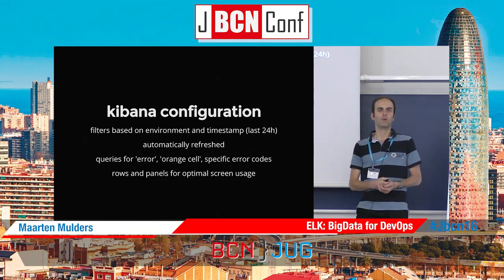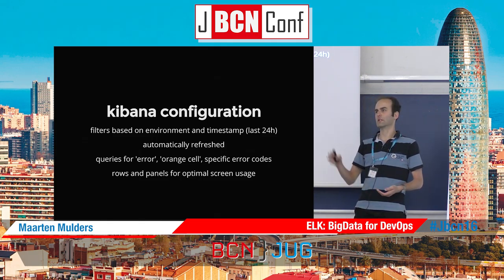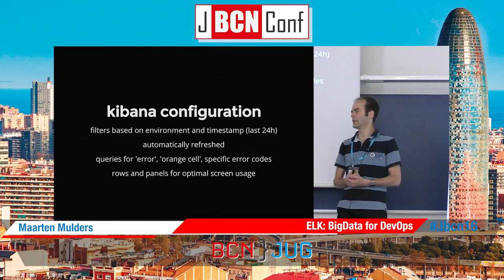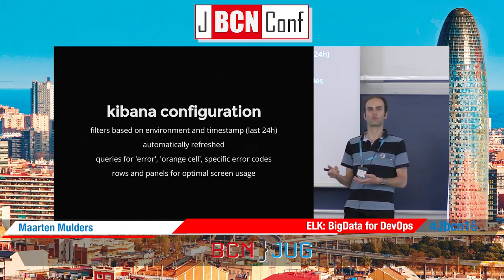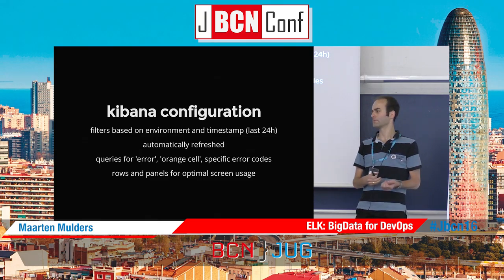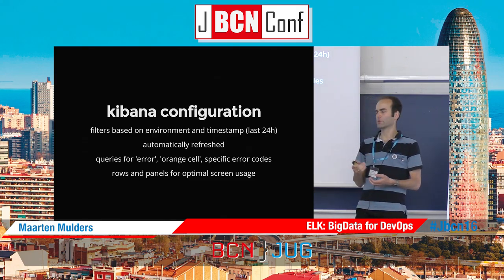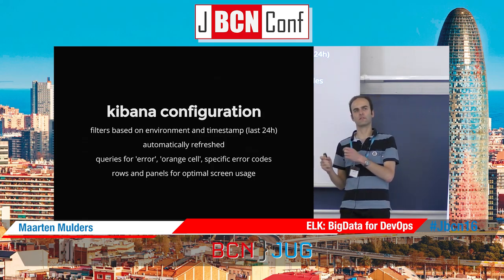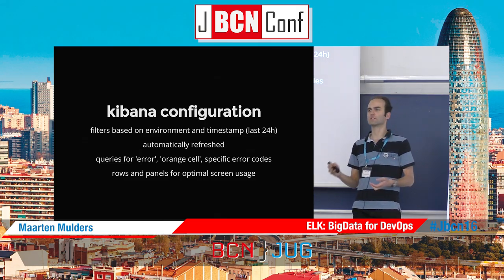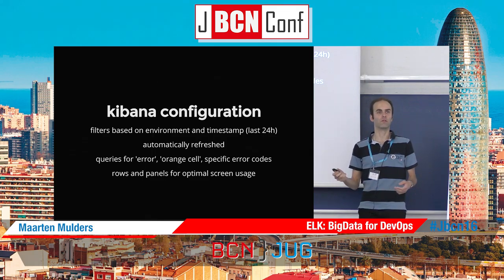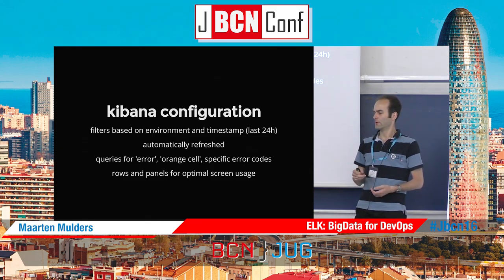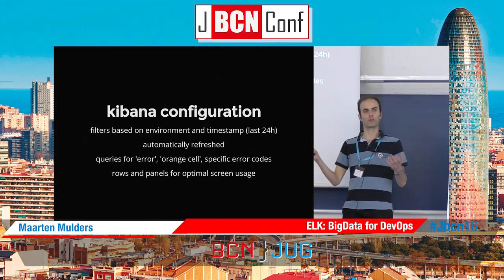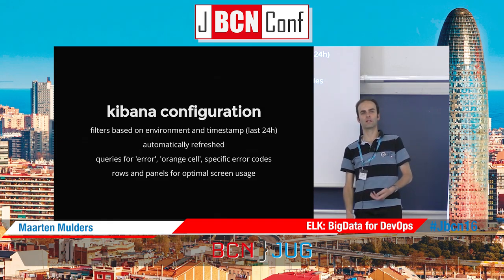The dashboard could be automatically refreshed. We had it projected on a large monitor on the wall so we could easily see what was happening in production. We defined queries for certain events - like this log event describes an error or a warning. Sometimes we had specific problems in the system and wanted to see how often they happened, so we wrote queries matching exactly those logging events. We also used rows and panels from Kibana to optimally use the whole screen without needing to scroll.